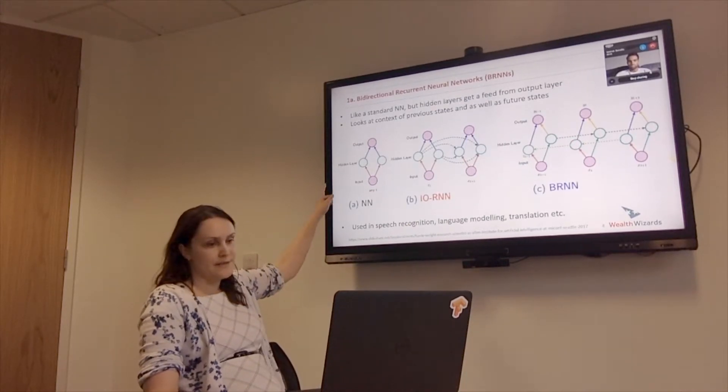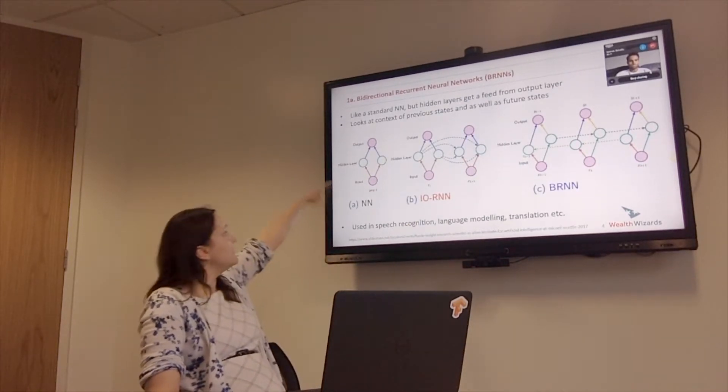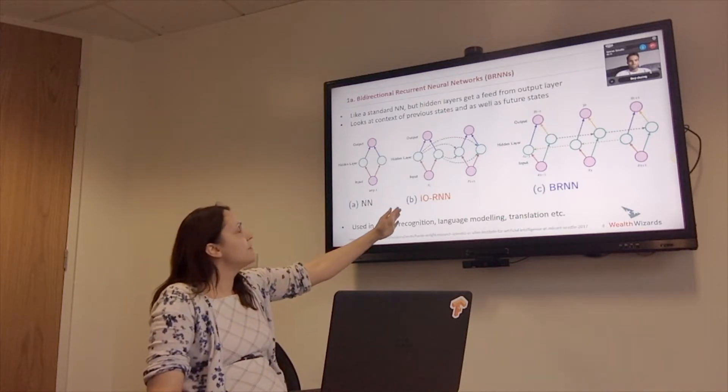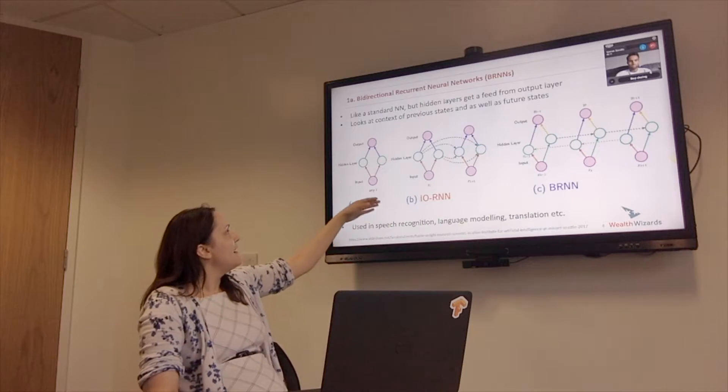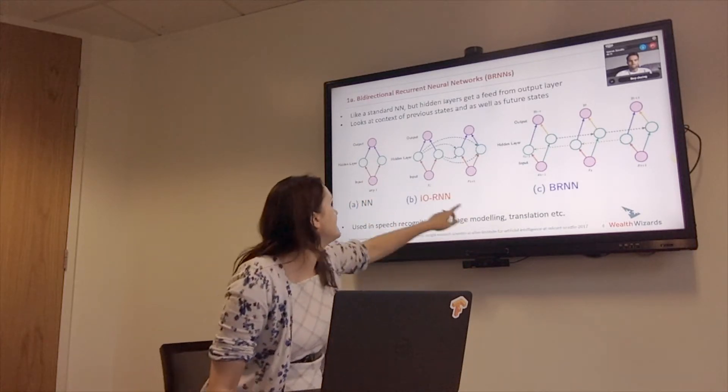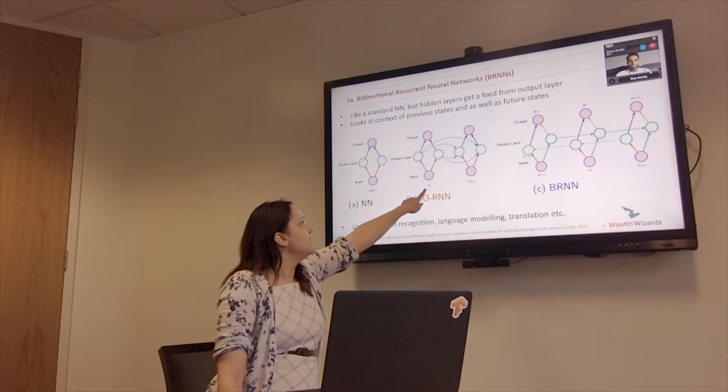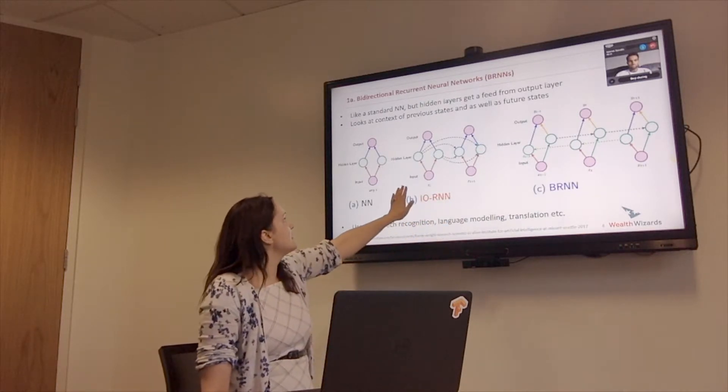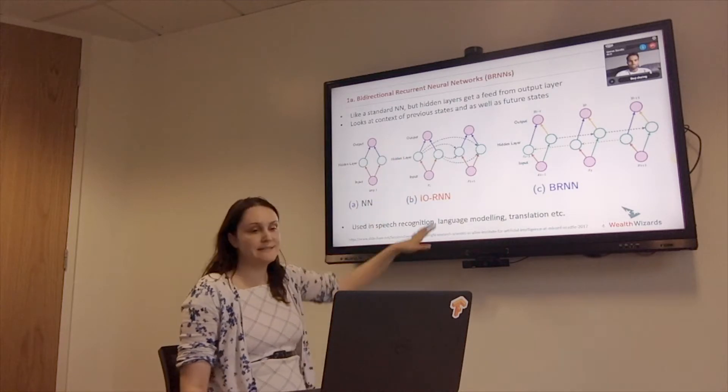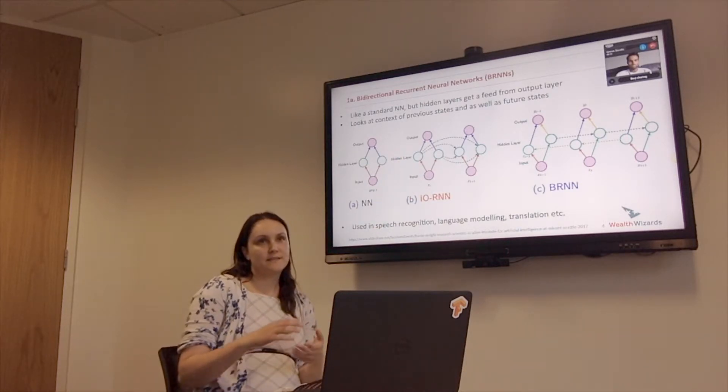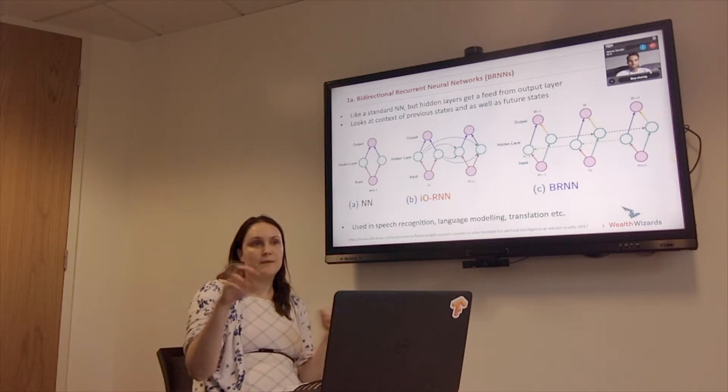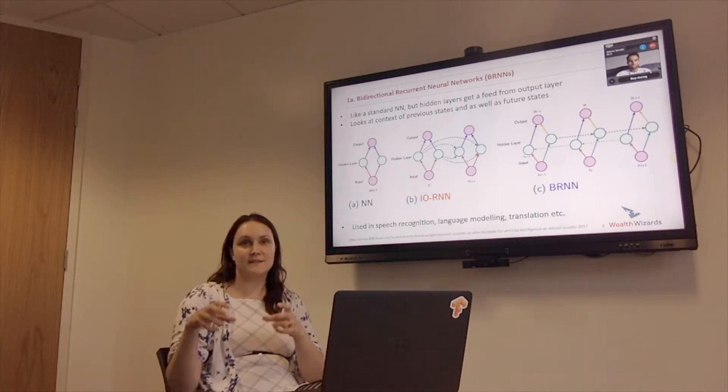If this one on the left is a neural network and you've got your input and hidden layers and output layers, then a recurrent neural network basically has, I don't know if you can see that, it's not very big, but this is XT and that's XT plus 1. So this is basically saying that it takes what was inputted previously into context for the next input.